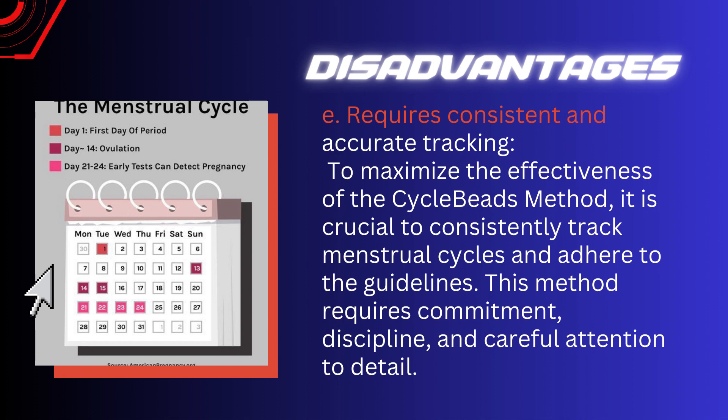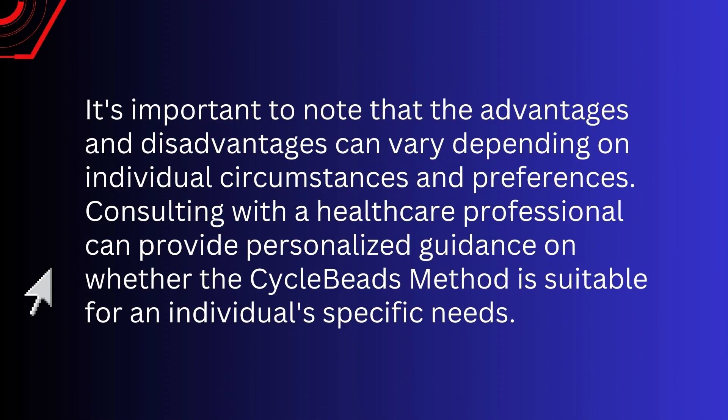The method also requires consistent and accurate tracking. To maximize effectiveness, it is crucial to consistently track menstrual cycles and adhere to the guidelines. This method requires commitment, discipline, and careful attention to detail. It's important to note that advantages and disadvantages can vary depending on individual circumstances and preferences. Consulting with a healthcare professional can provide personalized guidance on whether the cycle beads method is suitable for an individual's specific needs.